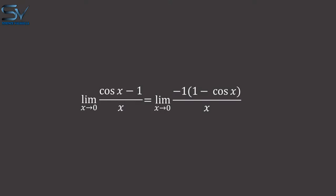When x approaches 0, 1 minus cosine of x equals 0. Finally, the limit is resolved and equals 0.